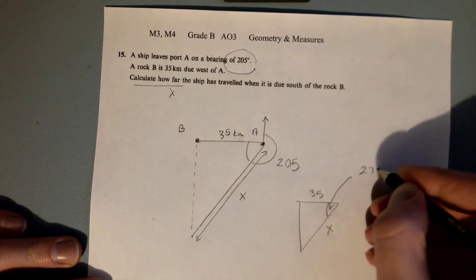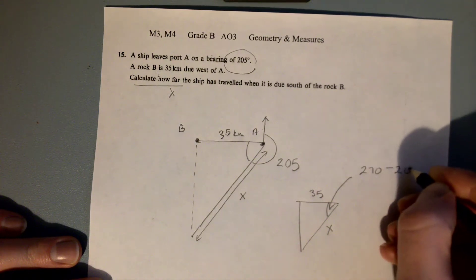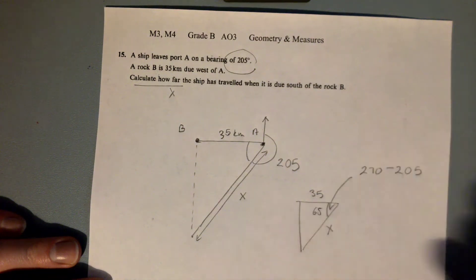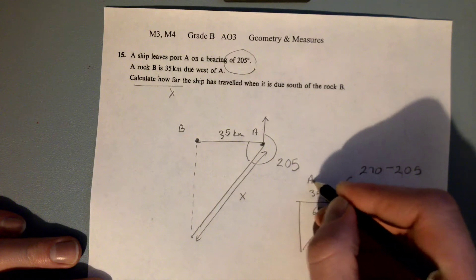We can set x as our hypotenuse, and this angle in the right angle triangle is going to be 270 subtract 205. The reason why it's 270 is because 270 is a three-quarter turn and we've already turned through 205.